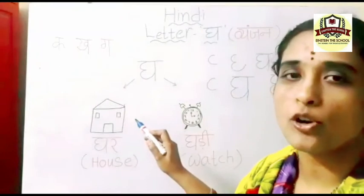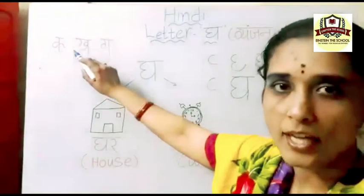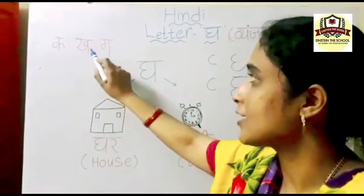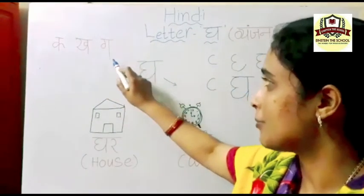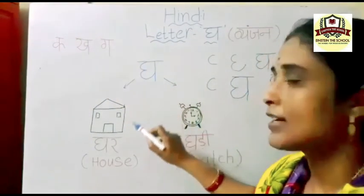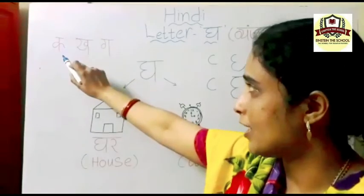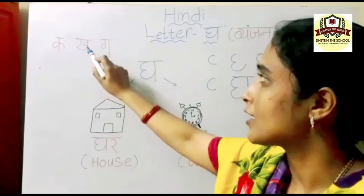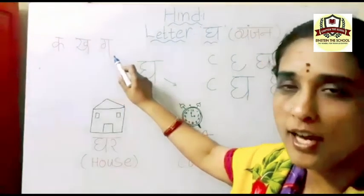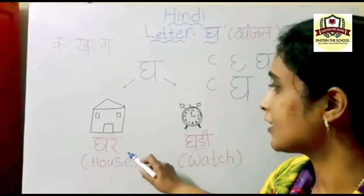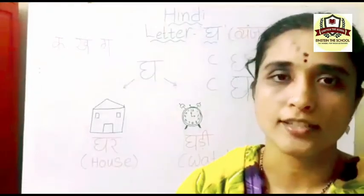Now you all tell along with me: Kaase, Kamal. Kaase, Kargosh. Gaase, Gamla. Gaase, Ghar. Kaase, Kamal. Kaase, Kargosh. Gaase, Gamla. Gaase, Ghar. Practice this later at your home, children. Thank you.